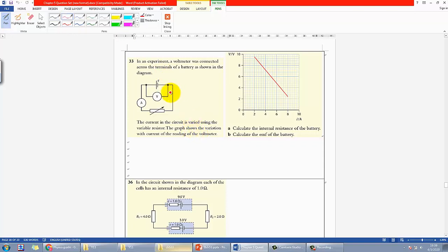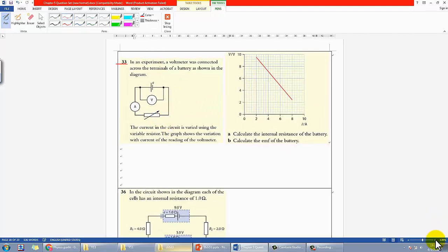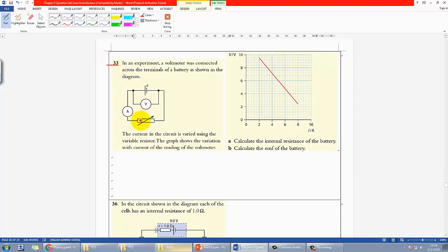Let's take a look together. Question 33 is a very typical internal resistance question. You can see the circuit diagram is very simple, and the graph is also very typical, like the one I asked you to do in the simulation.